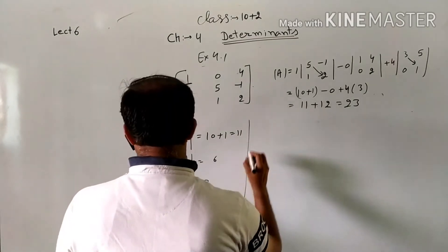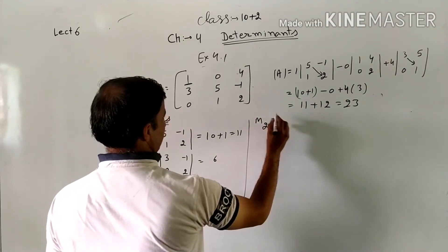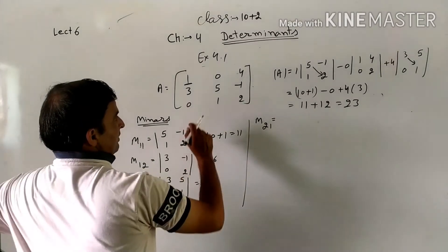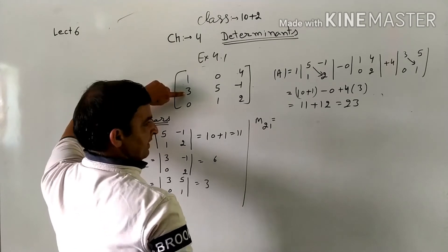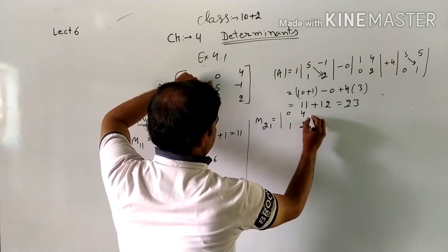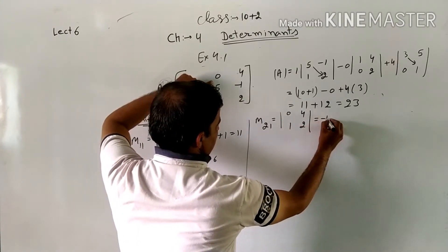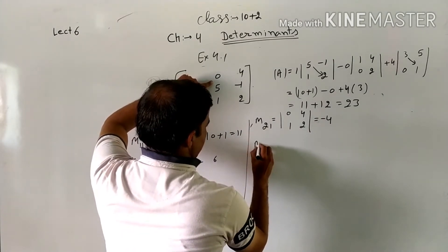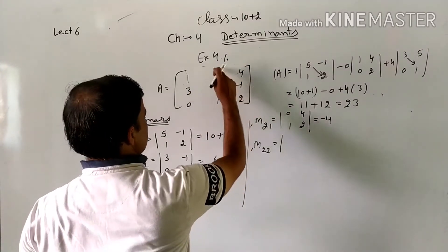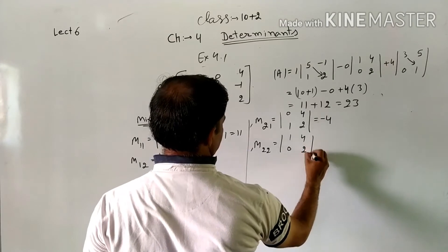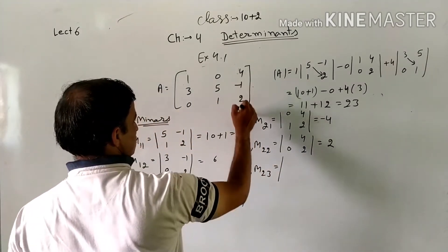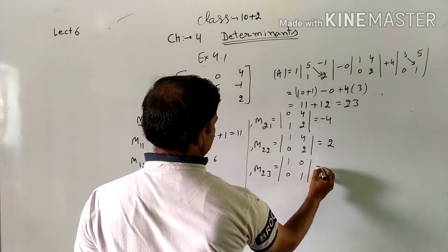Now M21: the element at position 2,1 is 3. Deleting its row and column gives [0, 4; 1, 2]. The product gives 0 - 4 = -4. M22: element is 5. Deleting gives [1, 4; 0, 2], determinant = 2. M23: element is -1. Deleting gives [1, 0; 0, 1], determinant = 1.